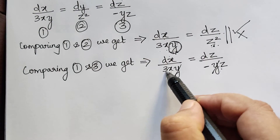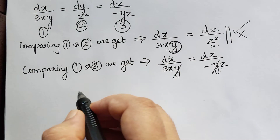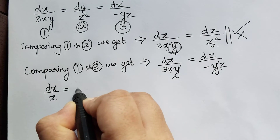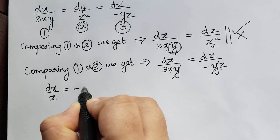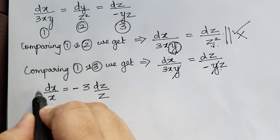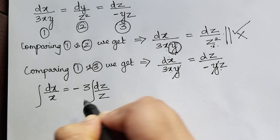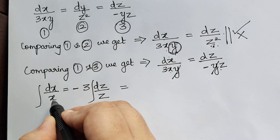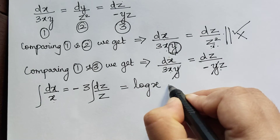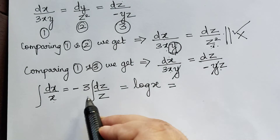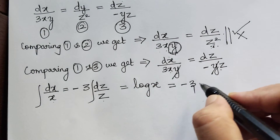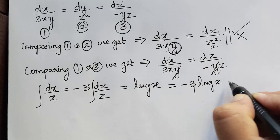Taking the constant 3 to the right, we get dx by x is equal to negative 3 dz by z. Integrating on both sides, the integration of dx by x gives log x, and on the right, negative 3 times the integration of dz by z gives negative 3 log z plus log c₁, since we have logarithm on both sides.